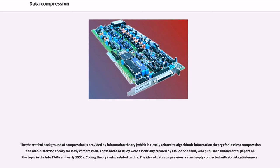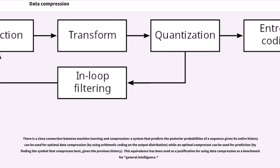Coding theory is also related to this. The idea of data compression is also deeply connected with statistical inference. There is a close connection between machine learning and compression. A system that predicts the posterior probabilities of a sequence given its entire history can be used for optimal data compression by using arithmetic coding on the output distribution, while an optimal compressor can be used for prediction by finding the symbol that compresses best given the previous history. This equivalence has been used as a justification for using data compression as a benchmark for general intelligence.